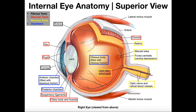Hopefully this gave you a good understanding of internal eye anatomy. In other videos where we talk about vision, we're going to cover more microscopic details and how we transduce light into an electrical signal that our brain can interpret. Please make sure to like this video and subscribe to my channel for future videos and notifications. Thank you very much.